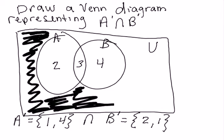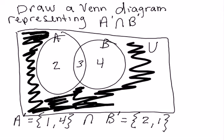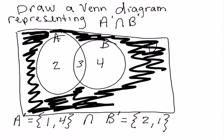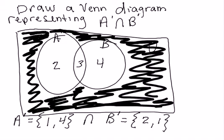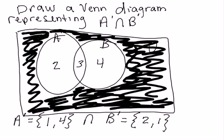That's the region. This is what A complement intersect B complement will look like when represented by a Venn diagram.